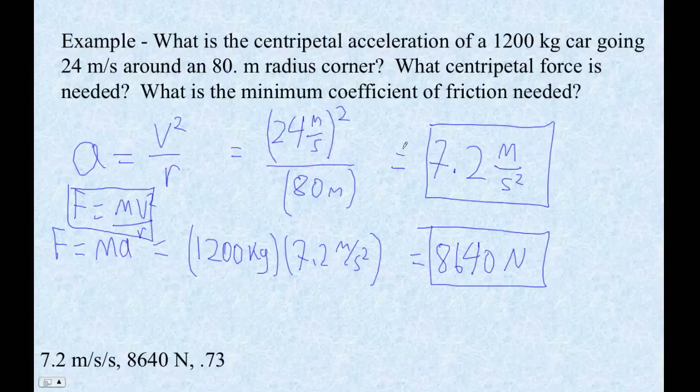And then what is the minimum coefficient of friction? Well, if the force of friction is mu times m times g, that is, this is a level road, it's not banked, then we're just going to say that that equals this centripetal force. So we're going to set that equal to 8640.